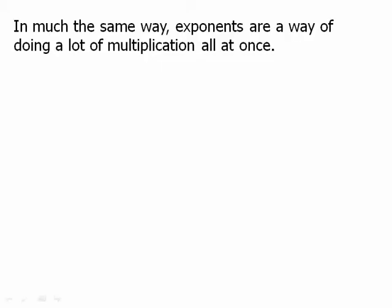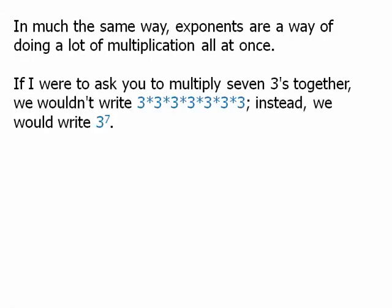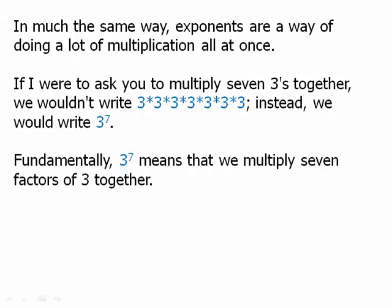Much in the same way, exponents are a way of doing a lot of multiplication all at once. If I were to ask you to multiply seven 3's together, we wouldn't write 3 times 3 times 3 times 3 times 3 times 3 times 3. Instead, we would write 3^7. Fundamentally, 3^7 means that we multiply seven factors of 3 together. So it's a very compact notation to express a lot of multiplication at once.